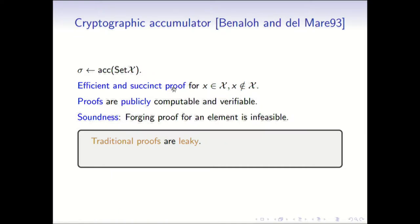The problem we are considering is really the outsourced dictionary setting, where a database has been outsourced and authentic proofs of membership and non-membership must be given. There is a well-studied cryptographic primitive that deals with this problem: the cryptographic accumulator, whose study was initiated in 1993. In the most general setting, a cryptographic accumulator summarizes a set chi with a very short succinct digest such that proofs of membership and non-membership can be generated and verified efficiently and publicly. Unfortunately, traditionally accumulators are not concerned with proof privacy.